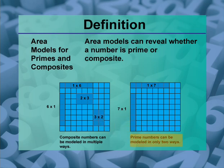On the right is the prime number 7. There are only two ways of modeling it: as a 1 by 7 array or as a 7 by 1.